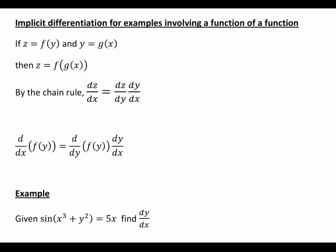When dealing with a function of a function, suppose z equals f of g of x, where z is a function of y and in turn y is the function of x, g of x. Then by the chain rule, dz/dx becomes dz/dy times dy/dx. It also follows that the derivative with respect to x of a function of y is found by differentiating the function with respect to y, then multiplying by dy/dx.